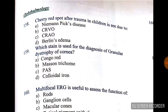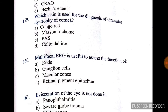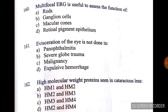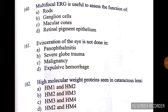Question number 158: cherry red spot after trauma in a child — option D is correct — it is Berlin's edema. Question number 159: which stain is used for the diagnosis of granular dystrophy of the cornea? The answer is option B — Masson's trichrome stain.